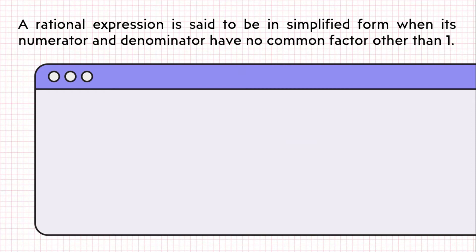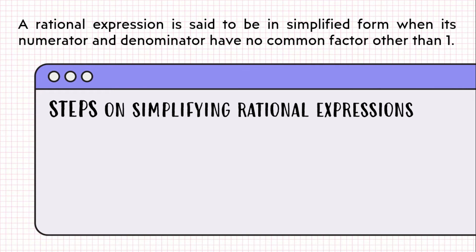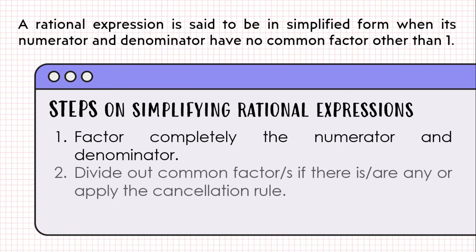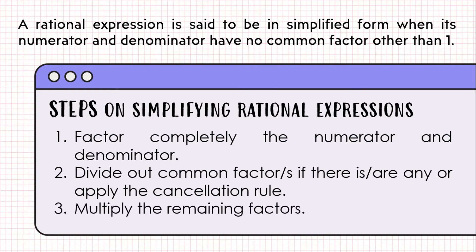Similarly, a rational expression is said to be in its simplified form when its numerator and denominator have no common factor other than 1. The process of simplifying rational algebraic expressions is similar to simplifying fractions — we write the expression so that the numerator and denominator have no common factors. Here are the steps: first, factor completely the numerator and denominator; second, divide out common factors using the cancellation rule; and third, multiply the remaining factors.